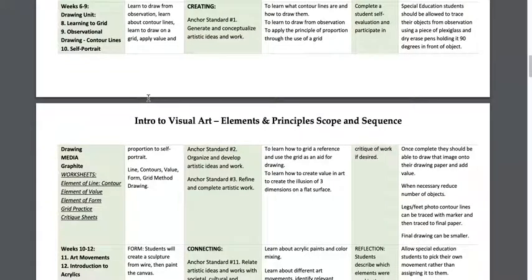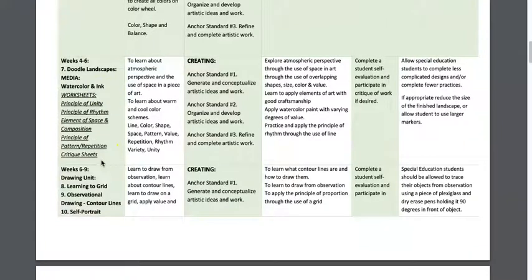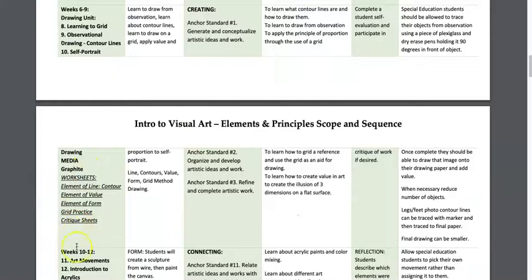Next is the drawing unit, which is one of the more rigorous units because students have a hard time learning to draw from observation. I have support strategies, like using a piece of plexiglass for special education students, because every student should be able to succeed in an introduction to art class. They also learn how to draw on a grid — a lot of kids who think they can't draw absolutely can once they try a grid. They do observational drawings, learn about contour lines with supporting videos, and there are worksheets covering all the elements and principles that can be used as supplements, sub lessons, or early finisher work.